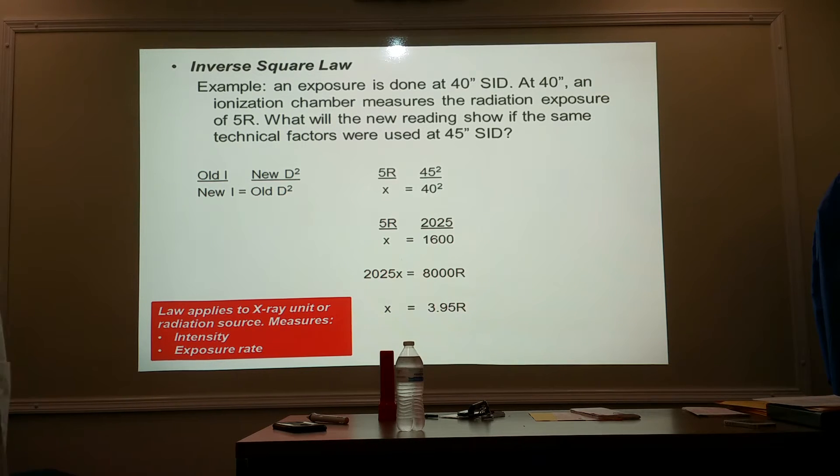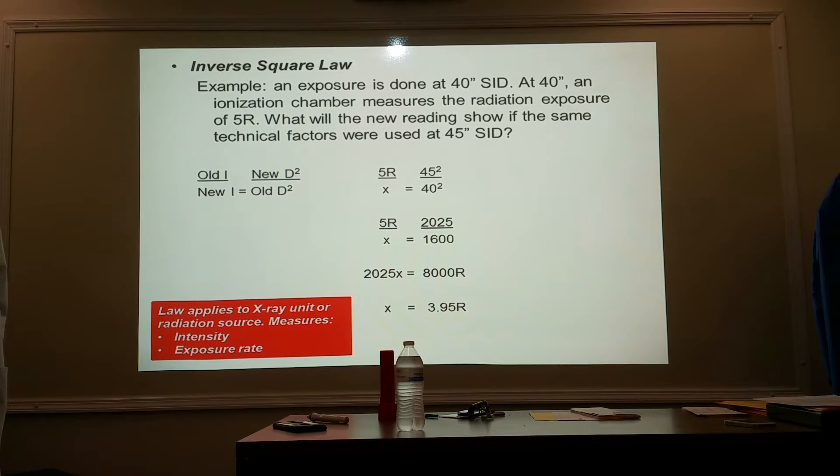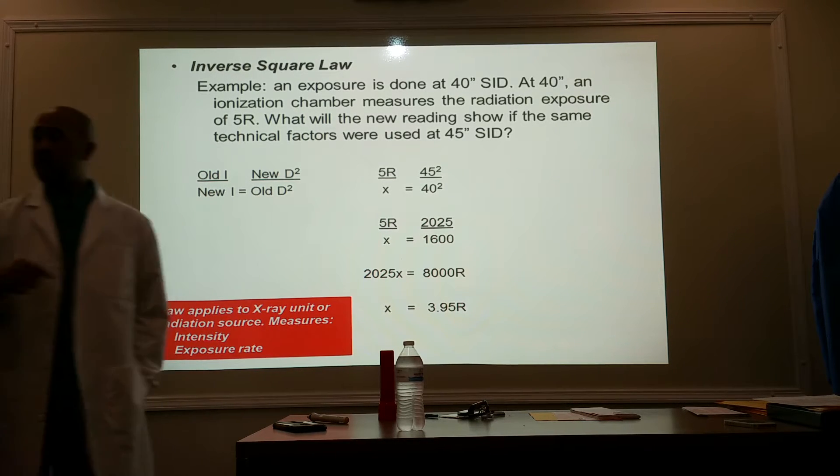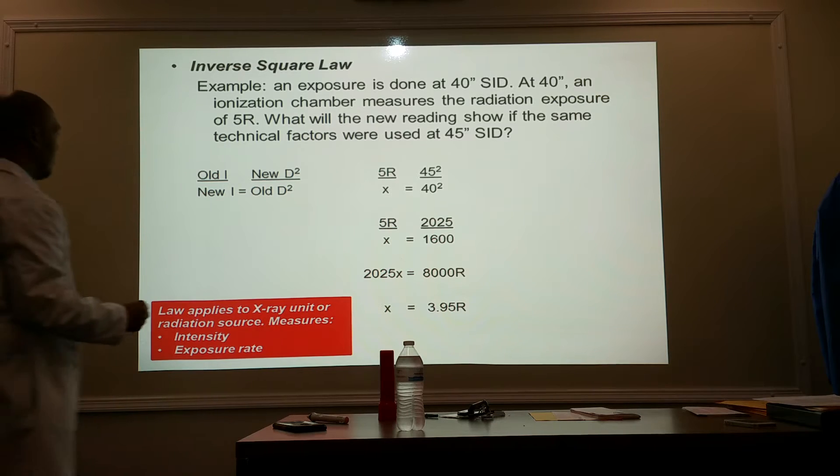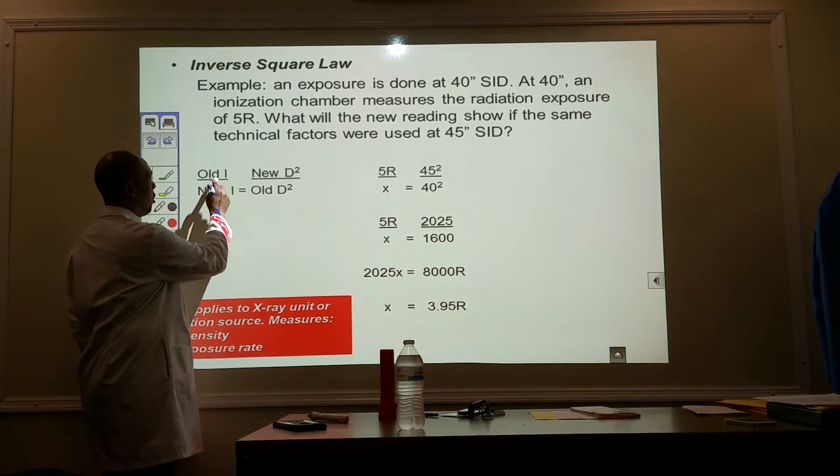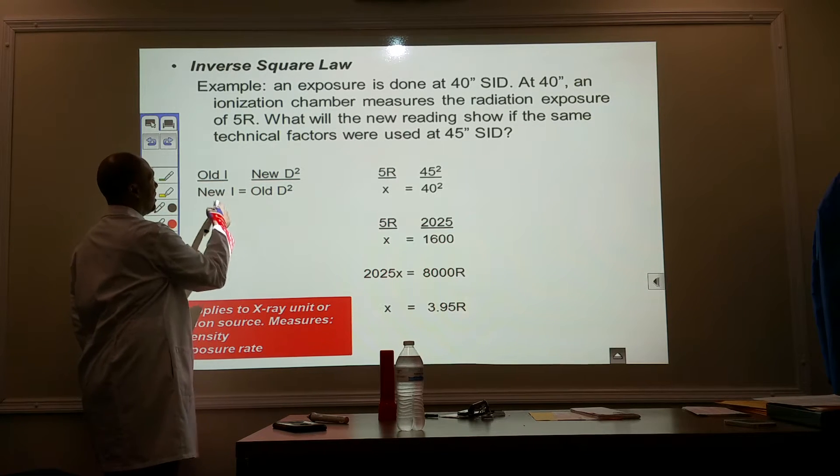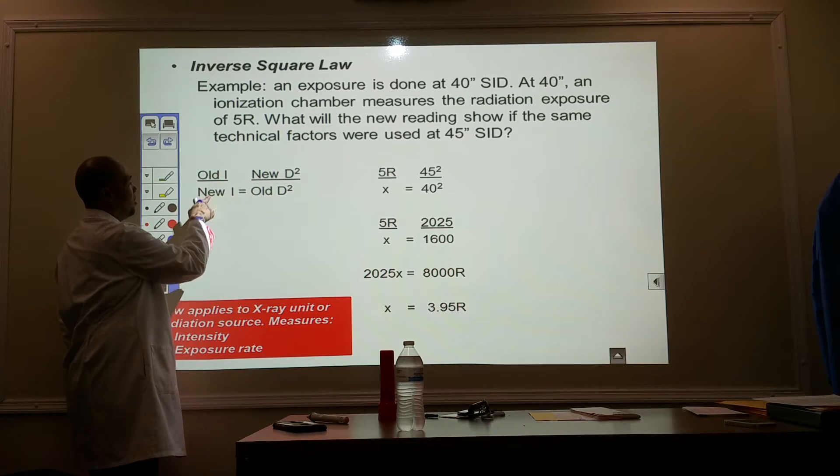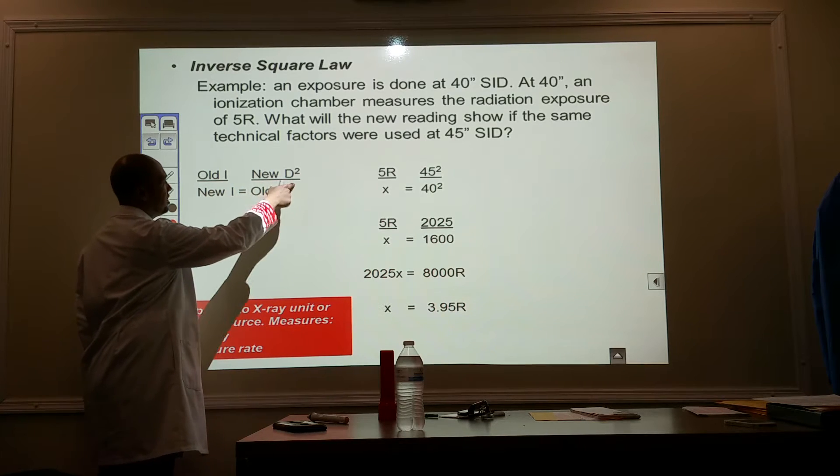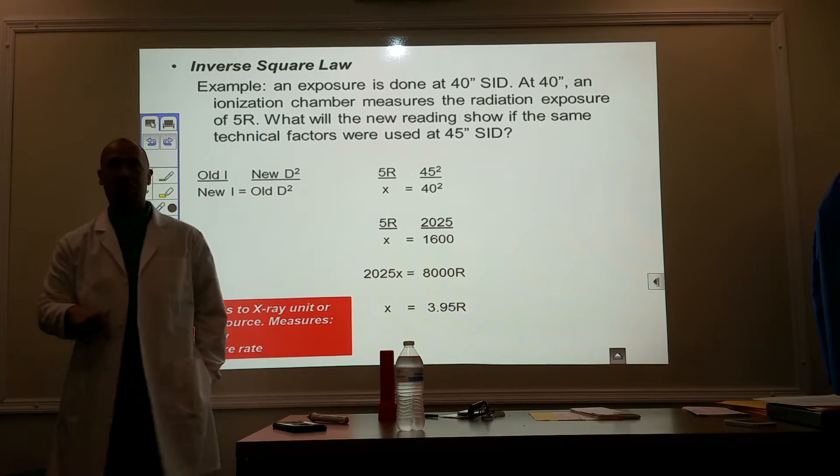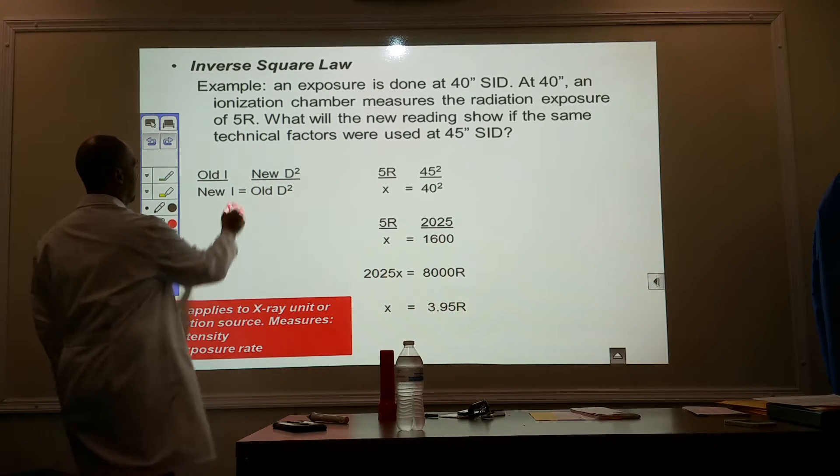Do you think it's still going to be at 5R? Okay, I'm going 5 inches further away. Is it going to be the same intensity? It's going to be lower. Probably not. Yeah, by just what we know, it's going to be lower. Everybody agree? All right, so this is the inverse square law. Because you're going old to new, new to old. It's inversed. Old intensity over new intensity is equal to new distance squared over old distance squared. But they're opposite. So it goes old to new, new to old.